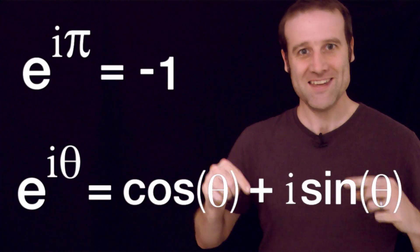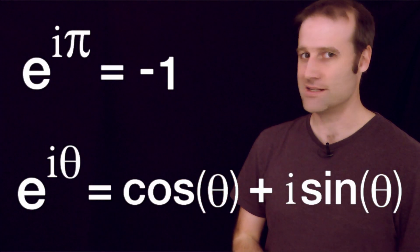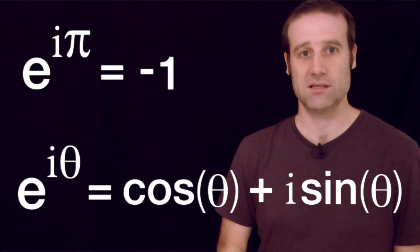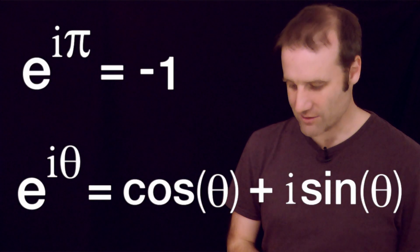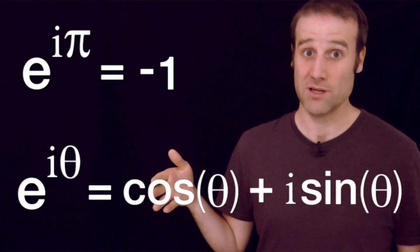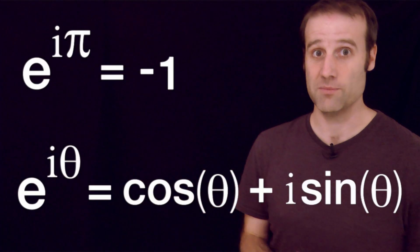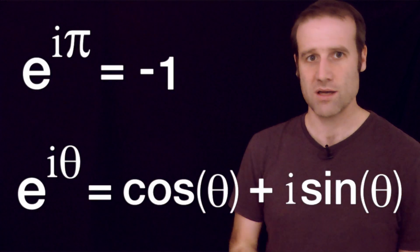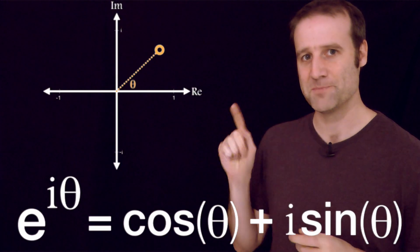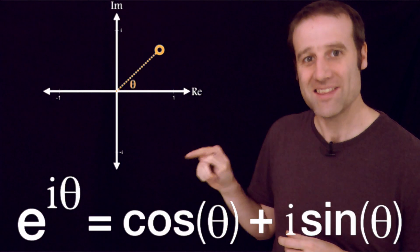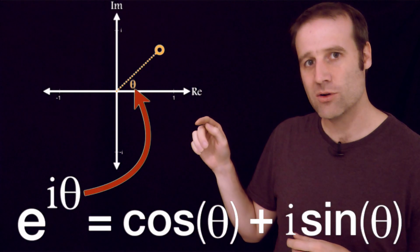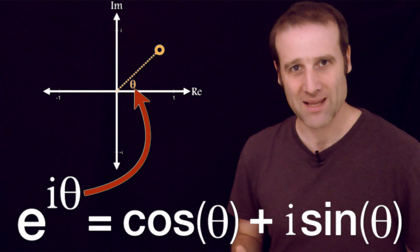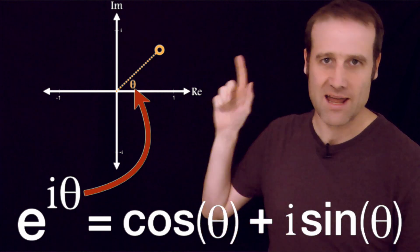This is the generalized form. You've got e to the i theta equals cos theta plus i sine theta. This is arguably more beautiful than just that one particular case, because what you have here are the two major ways of representing complex numbers. The e to the i theta, that theta is just the angle around. It's the polar coordinate version of a complex number, and you can scale that in and out to get everywhere on the complex plane.